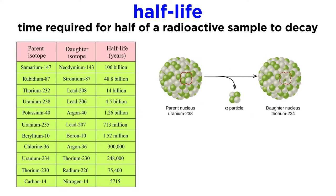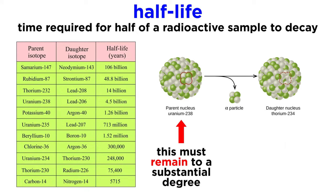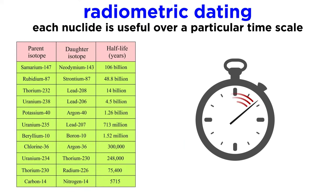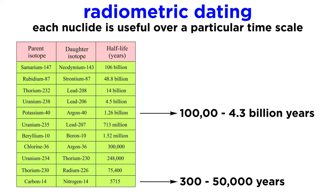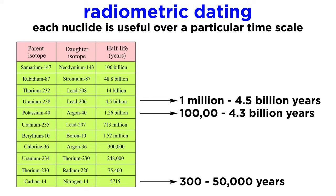Each radioisotope has a unique time period over which it is useful for dating, which is related to its half-life. The parent must have decayed enough to produce a measurable amount of the daughter isotope, but not so much that the parent has almost totally disintegrated. Here are a few of the most commonly used parent-daughter pairs and the ages over which they are useful: carbon-14 and nitrogen-14, 300 to 50,000 years; potassium-40 and argon-40, 100,000 to 4.3 billion years; uranium-238 and lead-206, 1 million to 4.5 billion years.